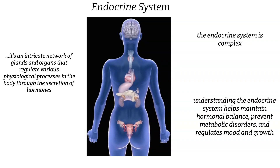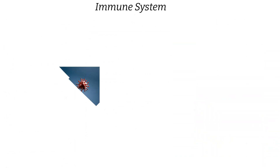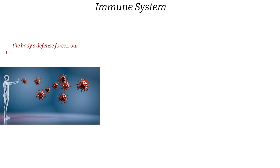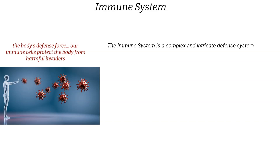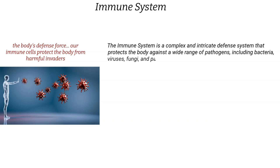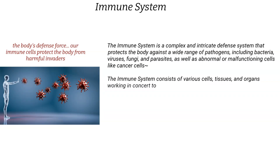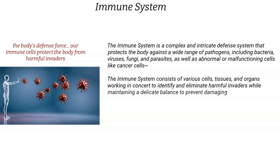Seven body systems down and five to go! Next up is the immune system — the body's defense force. Just as guards protect a castle, our immune cells protect the body from harmful invaders, including bacteria, viruses, fungi, parasites, and abnormal cells like cancer cells. Understanding how the immune system works and how to strengthen it equips us with knowledge to fight diseases, prevent infections, and promote a robust defense mechanism.